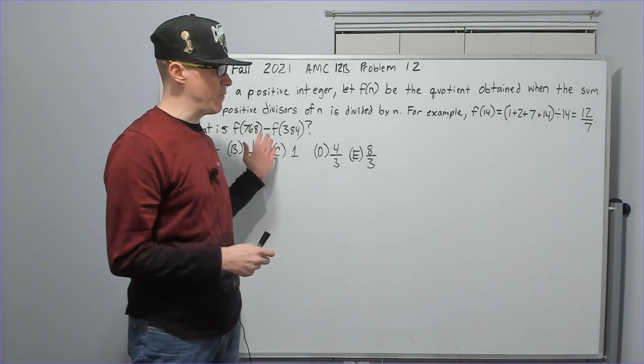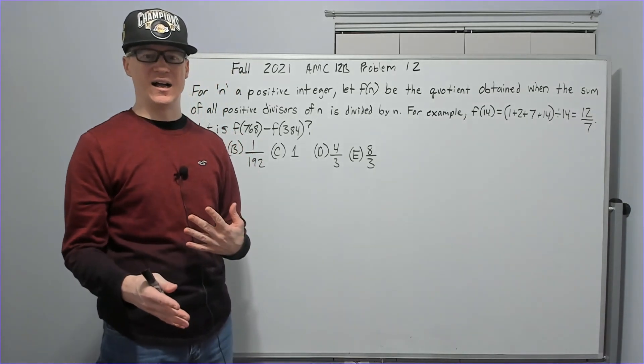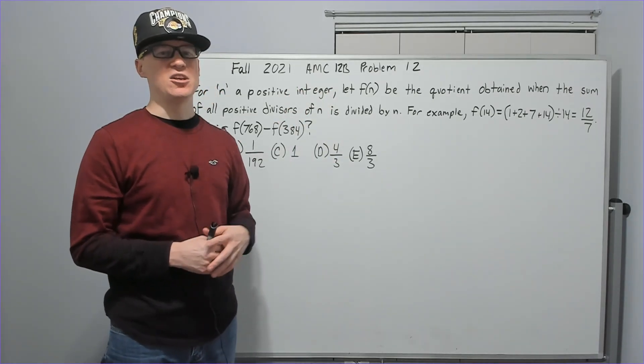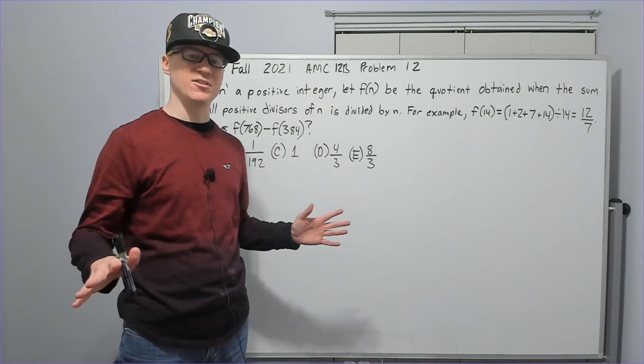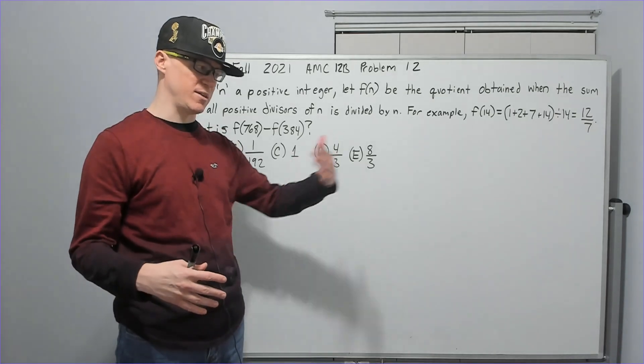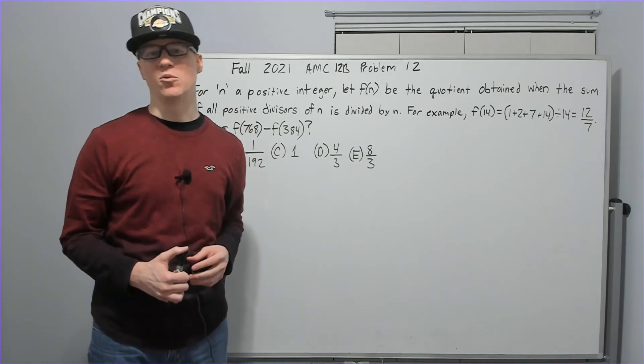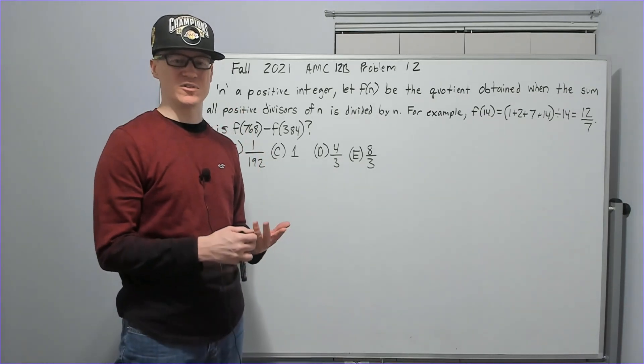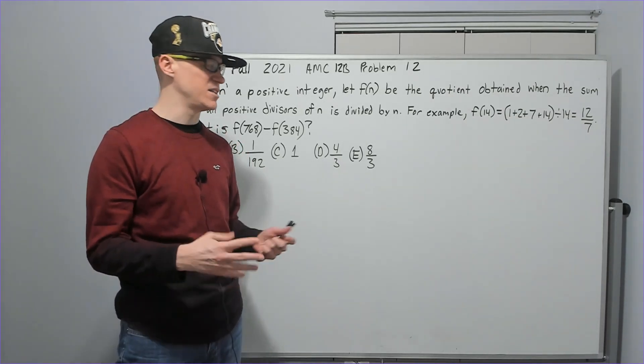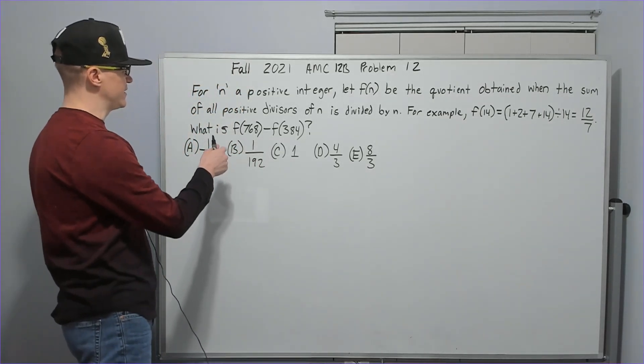I would have just bashed it if I was doing it during the test. When would you bash this question? You would bash this if you had one through eleven all correct, you're going for trying to qualify for AIME, you're probably not going for USAMO, and you just need like three more questions. If you get 14 right out of 25 and you skipped all the rest, you're going to get 100.5, pretty much guaranteed to qualify.